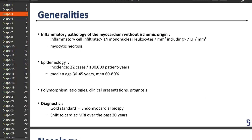Let me introduce what myocarditis is. It's an inflammatory pathology of the myocardium, which is not an infarctus, but there is an initial attack by an infectious agent like a virus or a bacteria. The real problem is that there is an overreaction of the patient's own immune system, which will attack the heart cells and destroy many things in the heart. It's a rare disease — only 22 cases per 100,000 patient years.